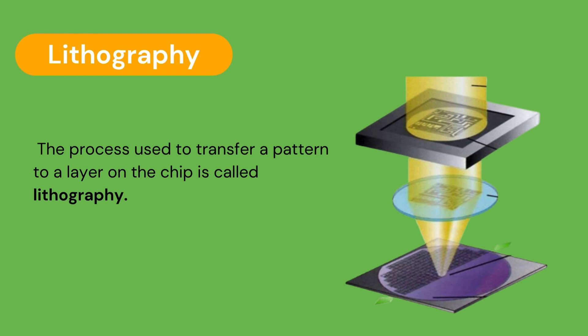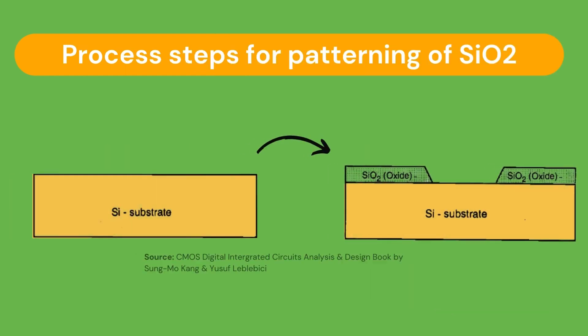Since each layer has its own distinct patterning requirements, the lithographic sequence must be repeated for every layer using a different mask. To illustrate lithography, we will be taking a look at the fabrication steps involved in patterning silicon dioxide through optical lithography — taking it from a silicon substrate that is empty to one that is covered with a patterned silicon dioxide layer on top of it.